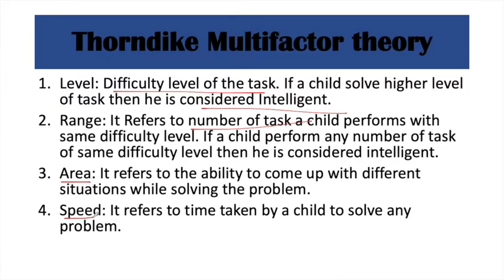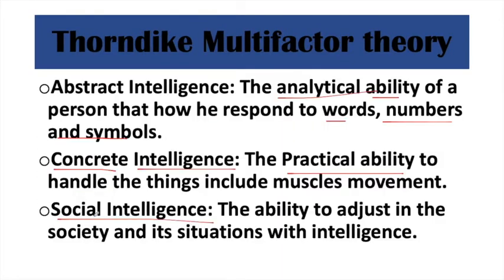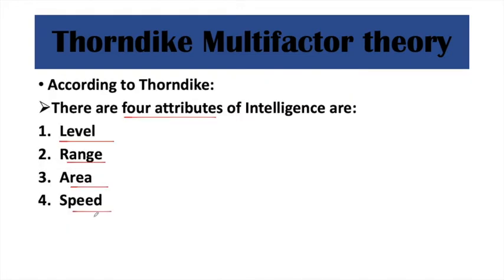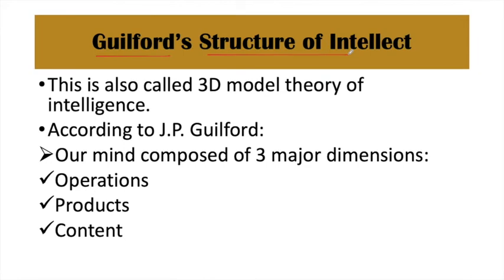Next is speed — how quickly they perform that task indicates their intelligence level. So that was Thorndike's multi-factor theory of intelligence, in which he described three types of intelligence — abstract, concrete, and social — and four attributes to measure it: level, range, area, and speed. Now we will discuss Guilford's structure of intellect, also called the 3D model of intelligence.